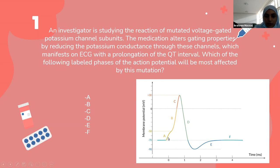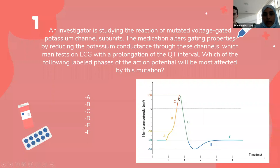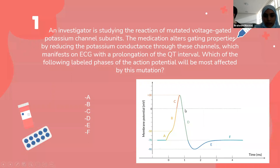Let's review the whole action potential. What happens in letter A? What usually opens in letter A? The sodium channels begin to open — exactly, bravo. The sodium channels begin to open all the way to the firing potential, and along with it the calcium channels open until we reach the peak. After that, once we have depolarization, repolarization is going to happen. Repolarization requires the potassium channels to open, and sodium and calcium begin to close. Because of that, once this patient has changes in the potassium conductance channels, letter D is going to be affected.